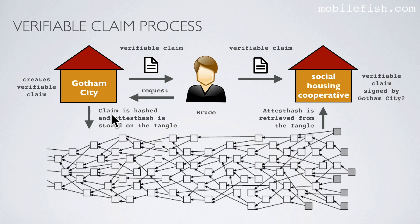The claim is hashed — also known as attesthash — and stored on the tangle using mass-authenticated messaging in restricted mode. Bruce shares this verifiable claim with the Social Housing Cooperative because he wants to be eligible for a social rental home. The Social Housing Cooperative verifies Bruce's claim by first hashing Bruce's claim, called the calculated attesthash, then extracting the attesthash from the tangle. If the calculated attesthash matches the stored attesthash, this is proof that Gotham City has signed Bruce's claim.